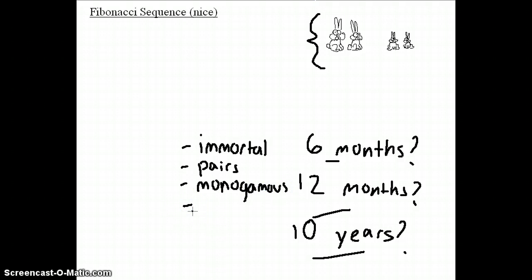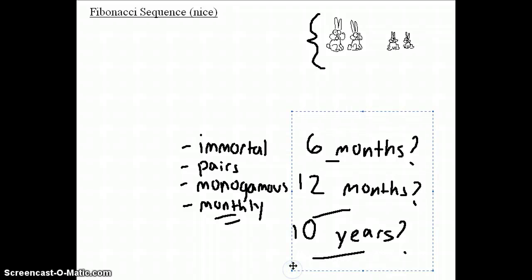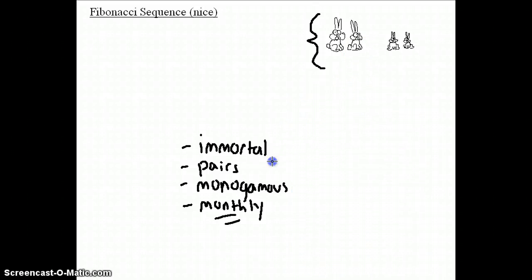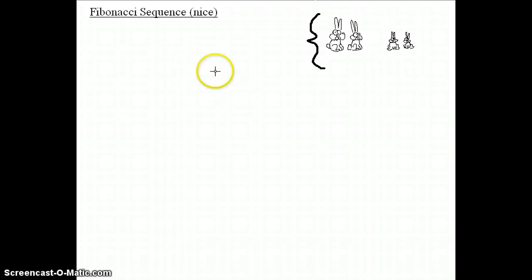And another assumption that he made is that every month, a pair of adult rabbits reproduces again, and gives birth to another pair of baby rabbits. So I'm going to try to illustrate all this stuff right now by using something of a diagram onto the left.